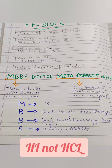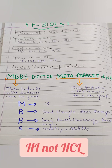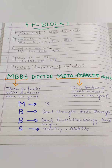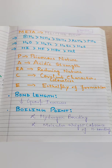The next B gives you two things: Bond dissociation energy and Bond angle. S gives you two things: Stability and Solubility. Once you memorize this, remember that these are the physical properties of hydrides of P-block which decrease down the group.